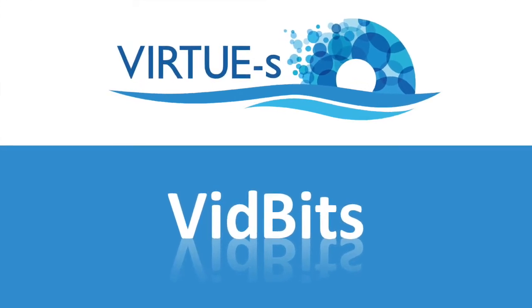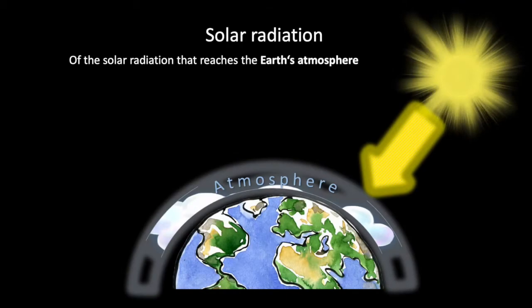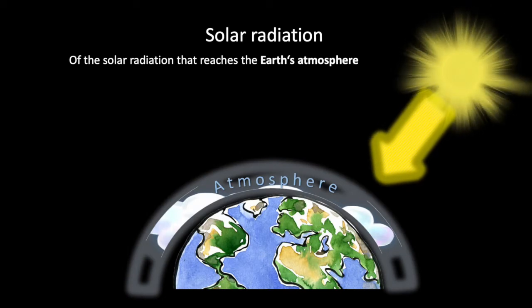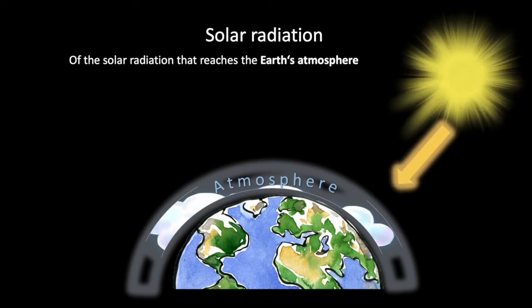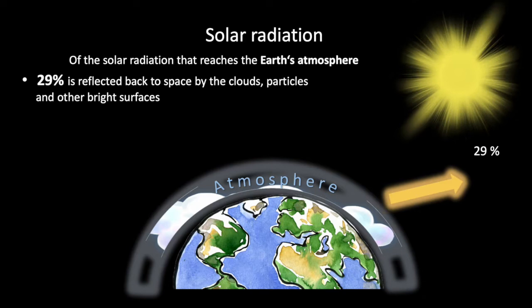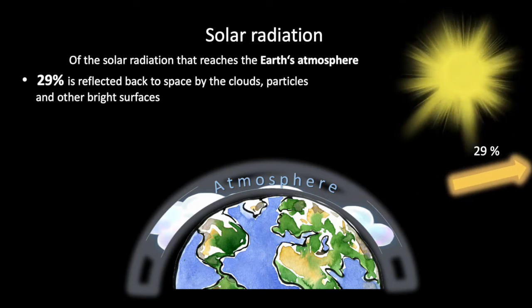What is photosynthetically active radiation? Of the solar radiation that reaches the Earth's atmosphere, 29% is reflected back to space by the clouds, particles, and other bright surfaces.